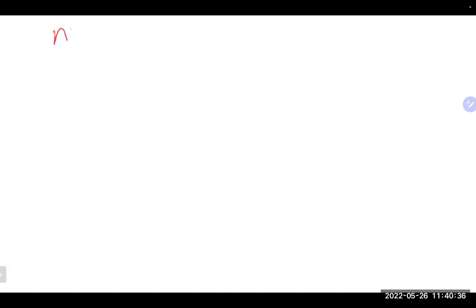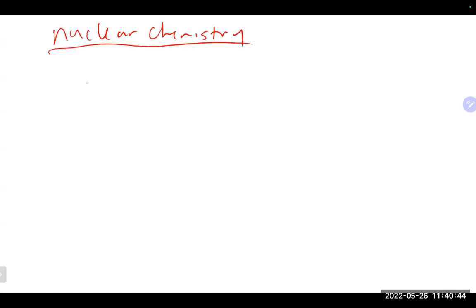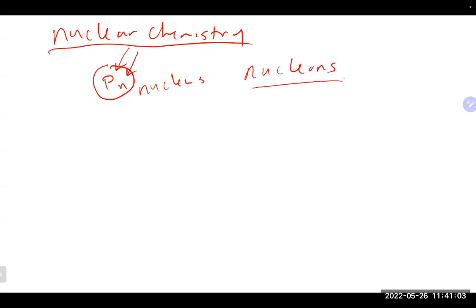Last time we got into nuclear chemistry, which is our second-to-last chapter. Nuclear chemistry involves the nucleus, specifically our protons and neutrons. In nuclear reactions, it's really these particles that get changed. They are sometimes referred to as nucleons—basically your protons and neutrons, the particles that make up the nucleus.